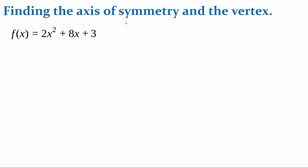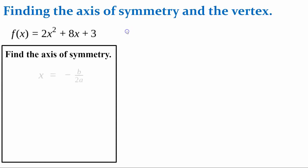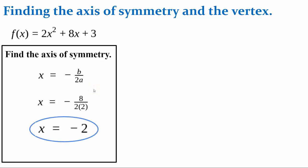Let's try an example. We're going to find the axis of symmetry and the vertex for the function f(x) = 2x² + 8x + 3. Finding the axis of symmetry, we use the formula x equals negative b divided by 2a. Here b is 8 and a is 2. Substituting those values and evaluating, 8 divided by 4 is 2, and with the negative sign we get that the axis of symmetry is the line x equals negative 2.